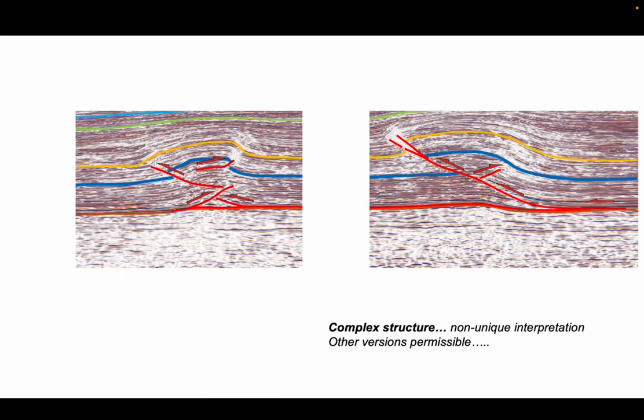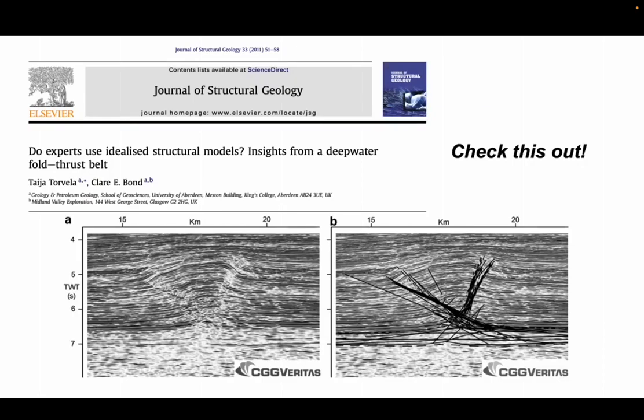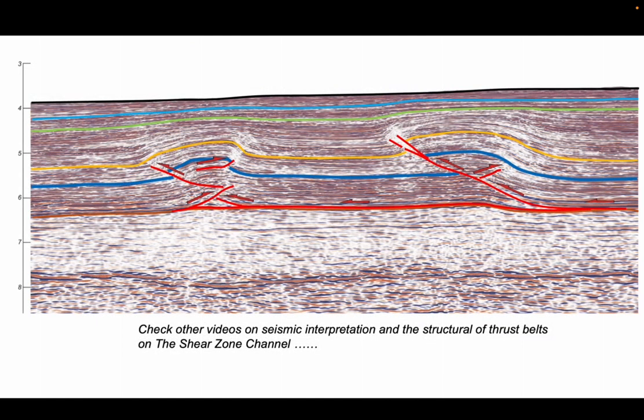This seismic profile, and specifically the left-hand fold structure we've got on screen at the moment, were used for an interpretation experiment by a group of experts at a conference on deepwater fold thrust systems. The results of this interpretation experiment were published in the Journal of Structural Geology in 2011 by Torvaer and Bond, and it's really worth checking out the paper to see the range of interpretations that a group of experts made. And to really emphasize the fact that the interpretation of complex structures should be treated as an exercise in managing uncertainty rather than trying to be too definitive about a single interpretation. This video is one of a number that you can find on the Shear Zone channel that look at the interpretation of seismic imagery. And you can find other videos that introduce ideas about the structure of fold and thrust belts, including those formed under deepwater settings like this.